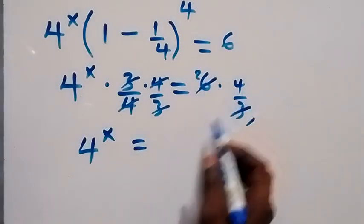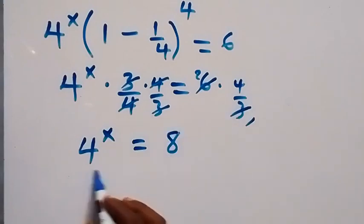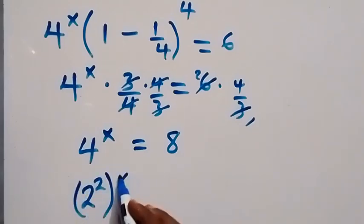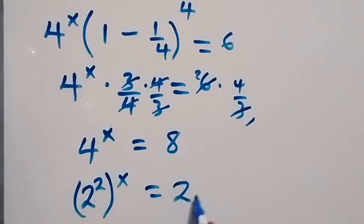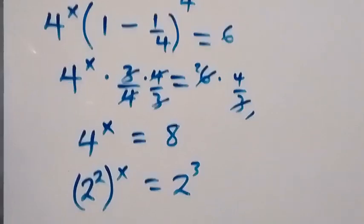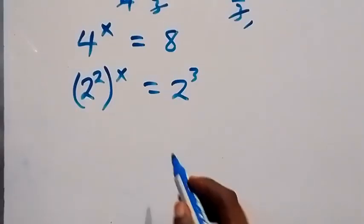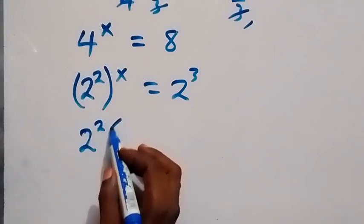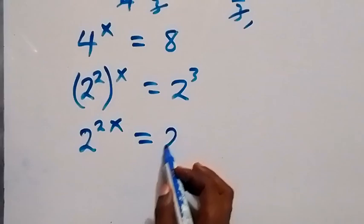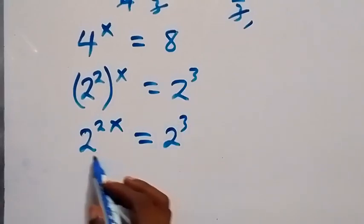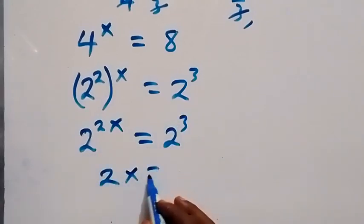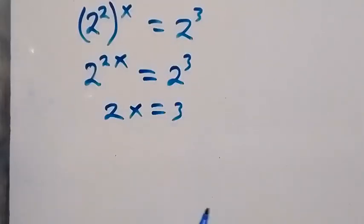From here we can express 4 as 2 raised to power 2, then raised to power x, which equals 2 raised to power 3, since that gives us 8. Then multiplying the powers, we have 2 raised to power 2x equals 2 raised to power 3. From here, since the bases are equal, we have 2x equals 3.